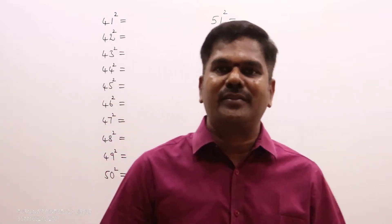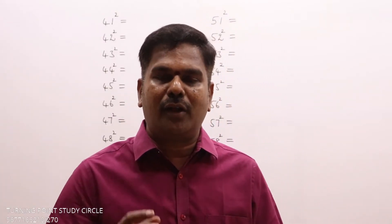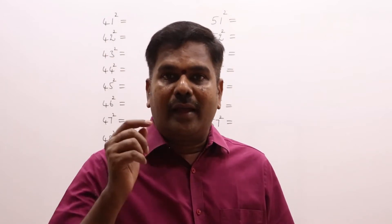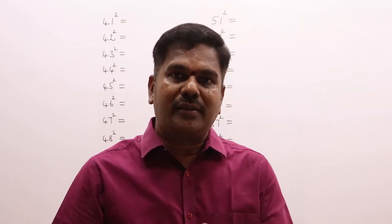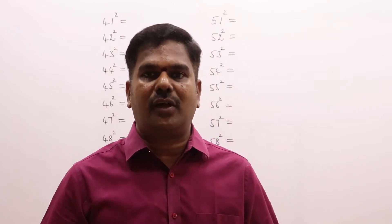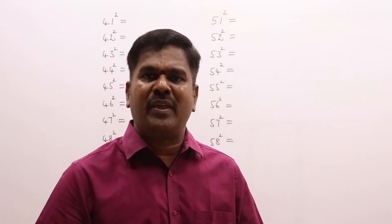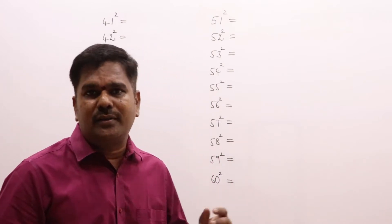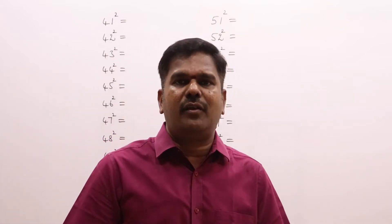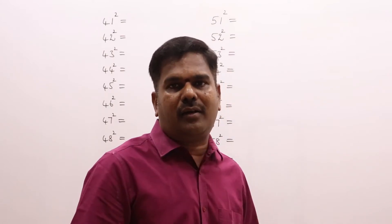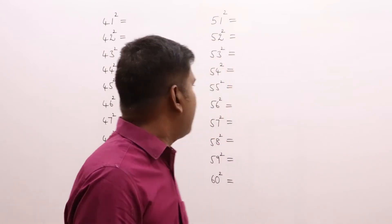Hi friends and students. We have seen many squares till now — 1 to 40 squares we learned, and also 91 to 110 squares, and squares ending with 5s. Now we are going ahead with 41 to 60 squares, and we will discuss how to easily remember these in this session.